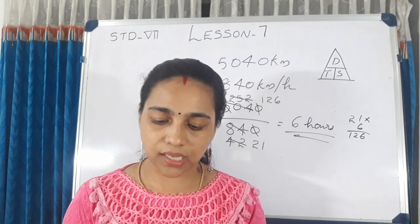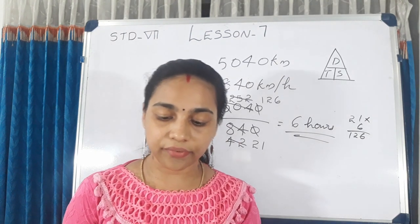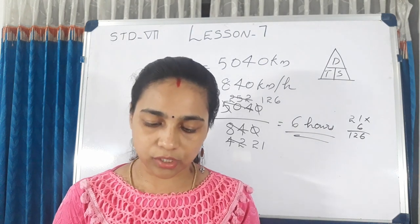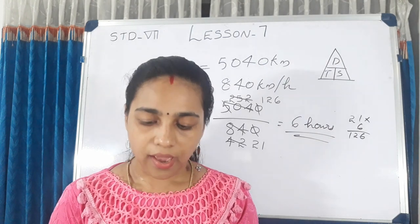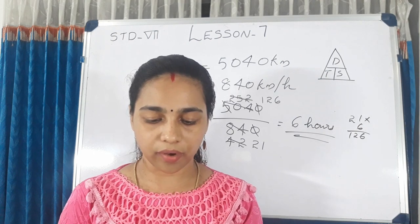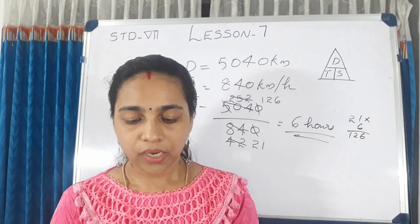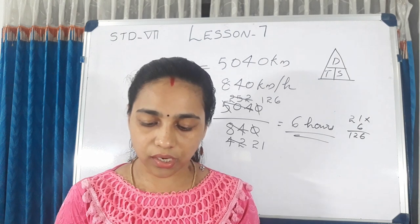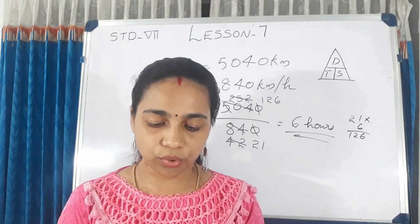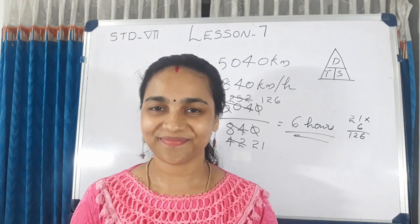Shiyama's exam starts at 2 o'clock. To reach the place, she has to travel 50 km by bus and 175 km by train. The average speed of the bus journey is 20 km per hour and the average speed of the train journey is 50 km per hour. To reach there 1 hour before the exam, when should Shiyama leave home?